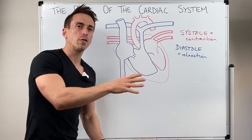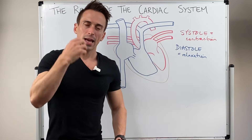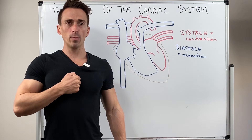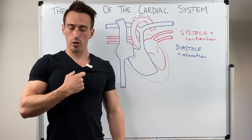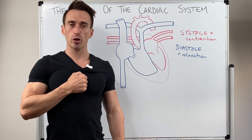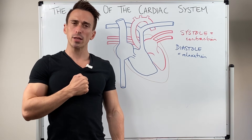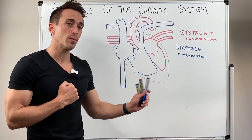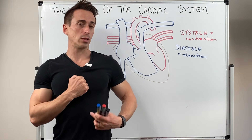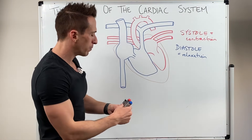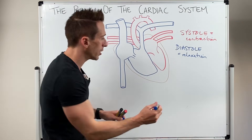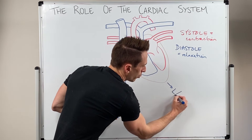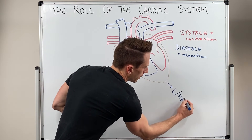The heart itself is located in our chest. It's a little bit bigger than the size of our fist and it sits a little bit towards the left of the sternum, the middle portion of our chest. It's also tilted a little bit so that the pointy bottom of the heart, which we term the apex, is actually pointing towards our left hip.